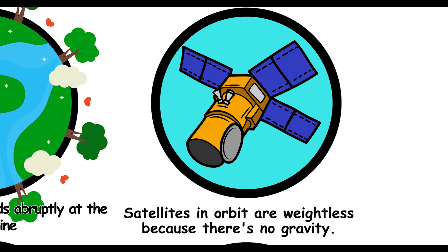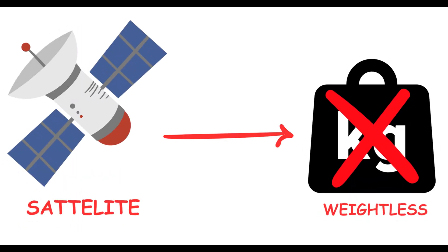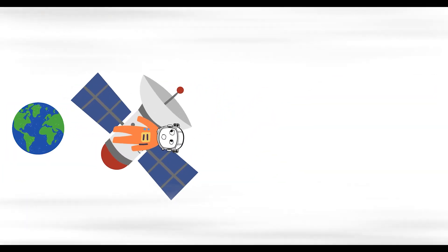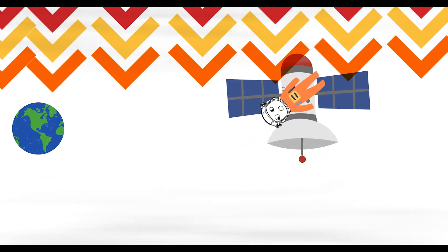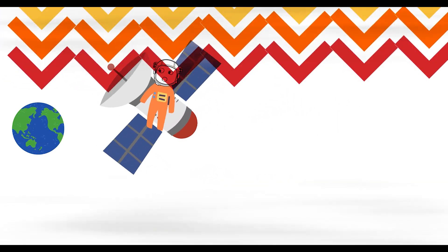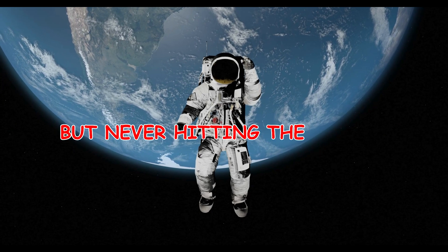Satellites in orbit are weightless because there's no gravity. Think satellites in orbit are weightless because there's no gravity? Not quite. Satellites are in free fall, constantly falling towards Earth, but moving forward fast enough to stay in orbit. Gravity is still acting on them, creating the sensation of weightlessness. So astronauts feel weightless because they're falling, but never hitting the ground.